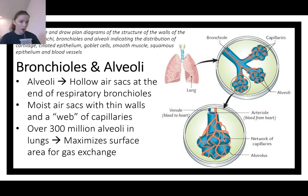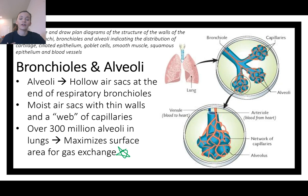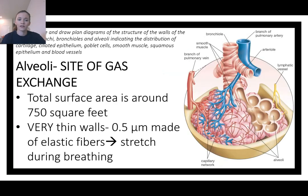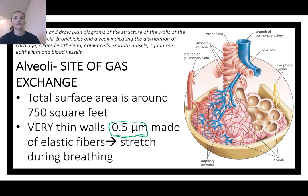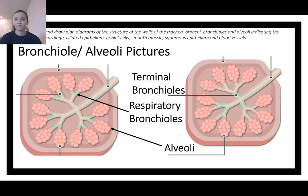Alveoli are hollow air sacs — picture them like balloons — at the end of the respiratory bronchioles. You have over 300 million alveoli in your lungs, which comes back to an idea we've seen before: surface area. Lots of little alveoli is better than a few big ones. Total surface area is around 750 square feet for both lungs — a huge surface area for gas exchange. The gases are diffusing, so increasing surface area increases diffusion rate. The walls are very thin — half a micrometer — and very elastic, like little stretchy balloons.